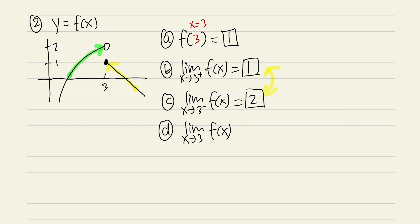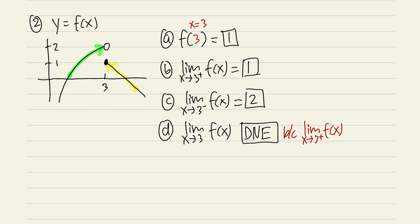For part d, the limit as x approaches 3 with no plus or minus: we check both sides. The right-hand limit is 1 and the left-hand limit is 2 — they are different, so the answer is does not exist. This is because the limit as x approaches 3 from the right is not equal to the limit from the left. This picture also shows another case of a function being discontinuous.